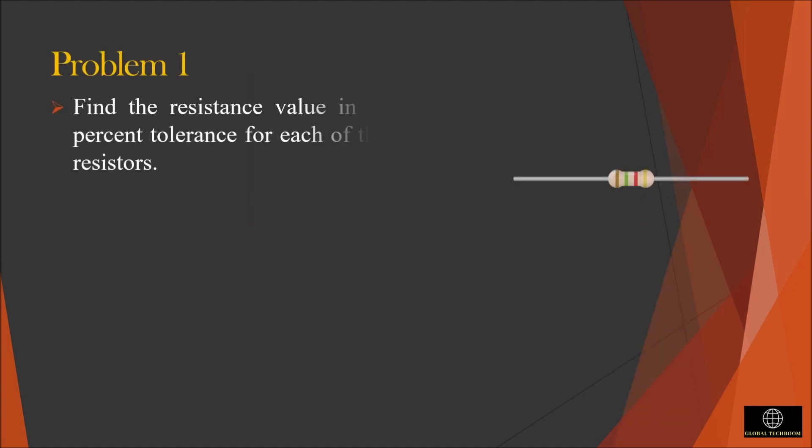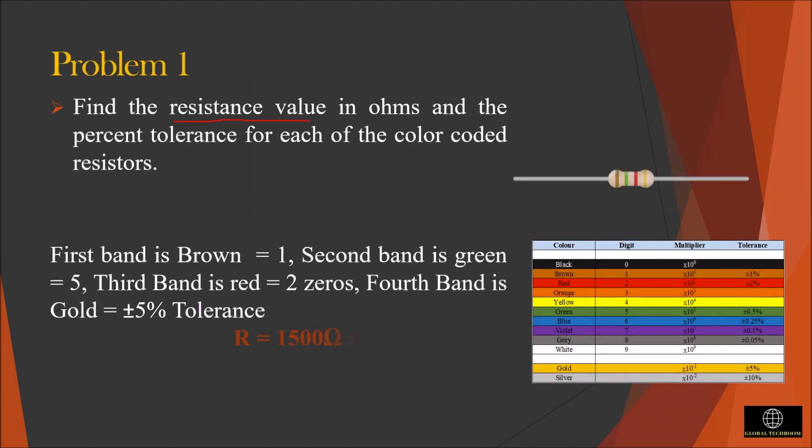In this problem, we will be finding the resistance value in ohms and the percentage tolerance. From the figure, we can find that the first band is brown so the value will be 1. The second band is green so the value will be 5, and the third band is red so we have to add two zeros to the digit. The fourth band is gold and so the tolerance will be 5%, and the final value of the resistance becomes 1500 ohms with the tolerance of 5% in it.